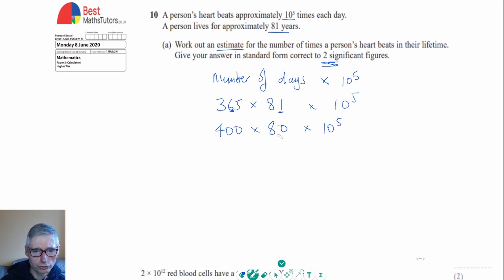So what we've got to do next: we can do the 400 times the 80, but first of all we can do 4 times 8 gives us 32, and then we just need to add three zeros onto that. This is still times 10 to the 5.